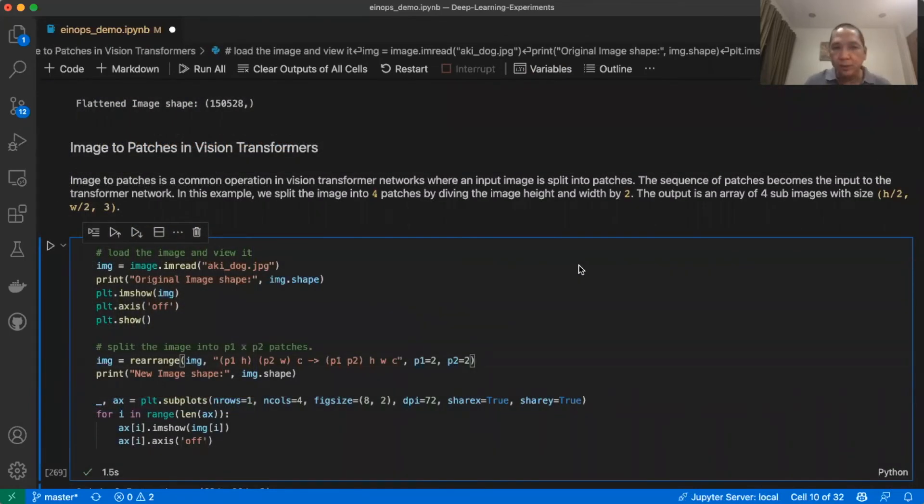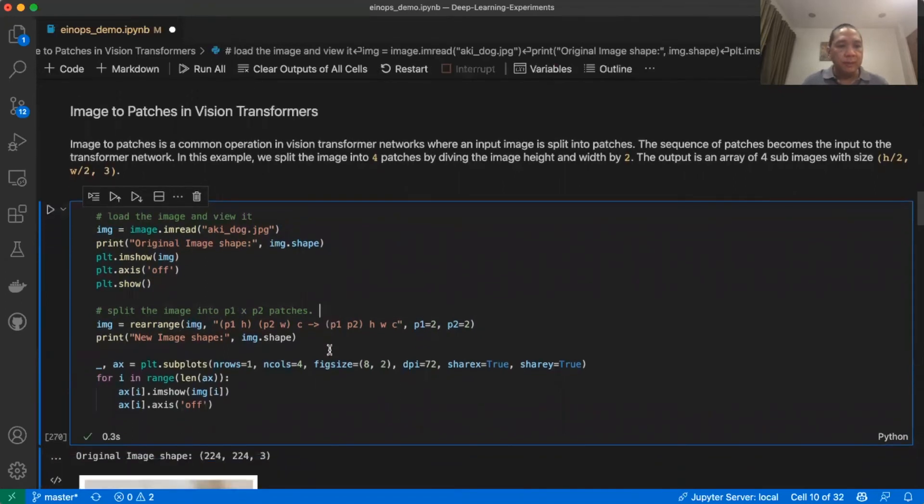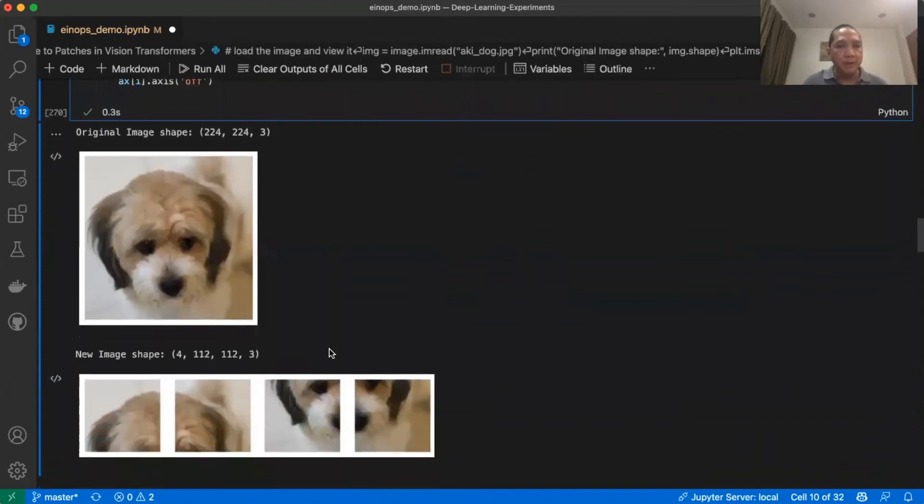The next exercise that we are going to do is to convert an image into patches. This task is commonly done in vision transformers. In this exercise, we will first load the image again. And then we will call rearrange. In the call to rearrange, it will split the image into 2x2 patches. Let us execute the code. This is the original image, and these are the image patches.